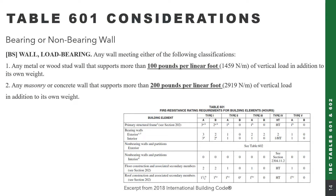What makes a wall bearing or non-bearing? The easiest place to look is the definition section of the IBC. A load-bearing wall is any metal or wood stud wall that supports more than 100 pounds per lineal foot, in addition to its own weight. This will be an important consideration when working with Table 601.